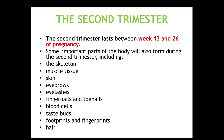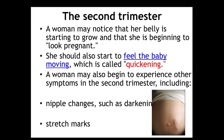The second trimester, weeks 13 to 26, sees continued development of the skeleton, muscle tissue, skin, eyebrows, eyelashes, fingernails, toenails, blood cells, teeth, footprints, fingerprints, and hair. During this trimester the mother can feel the quickening — the baby's first movements. The pregnant woman may also notice nipple darkening, possible milk leakage, and stretch marks appearing on the abdomen.